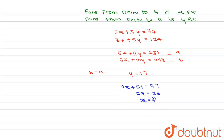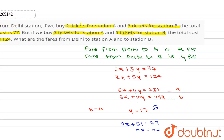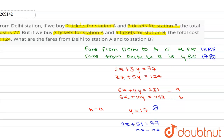Since x = 13 and y = 17, this is our final answer. From Delhi to station A, the cost of fare is 13 rupees, and from Delhi to station B, the cost of fare is 17 rupees. This is our final answer.